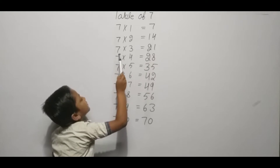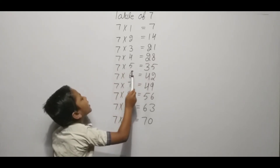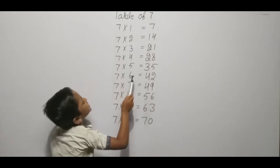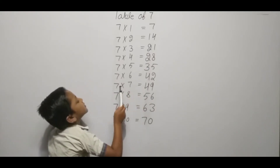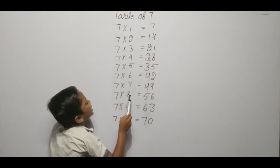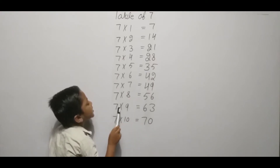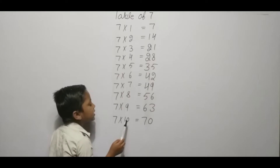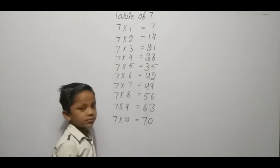Seven six ja forty-two, seven seven ja forty-nine, seven eight ja fifty-six, seven nine ja sixty-three, seven ten ja seventy. Thank you.